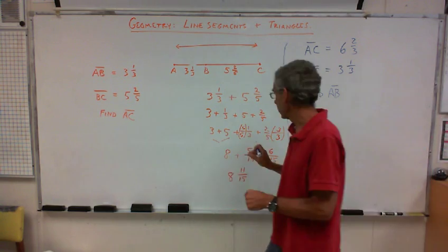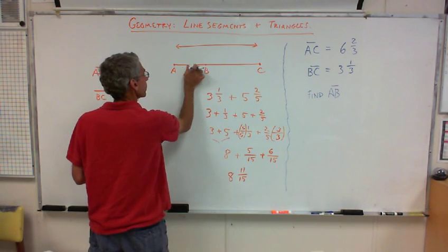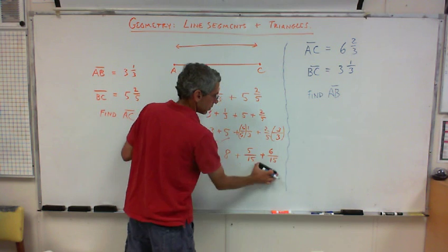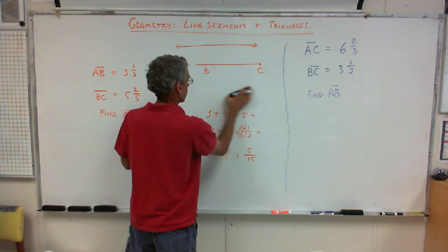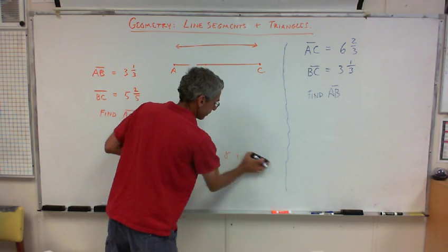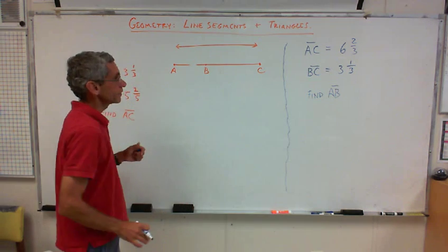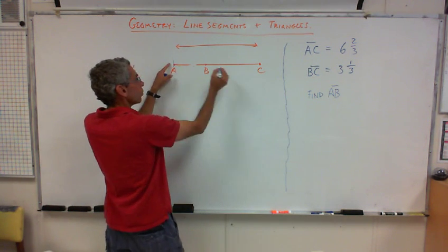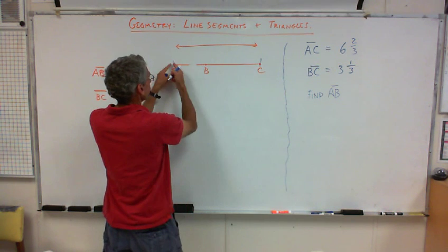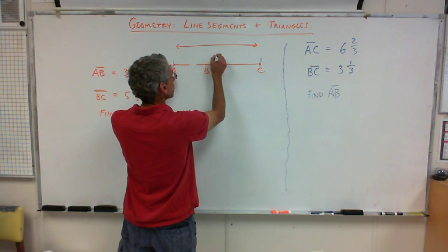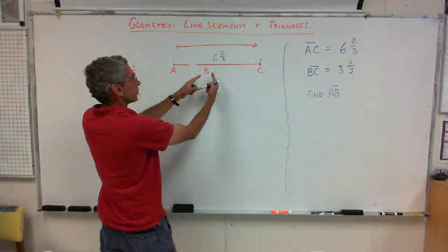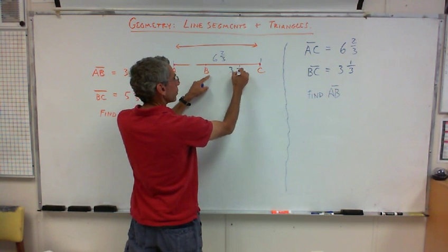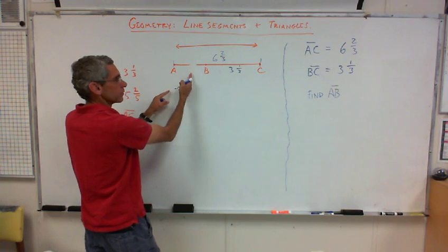So, in that case, let's get rid of this now. Can I erase all this stuff now? Yes? Yes? Yes. So, it's not confusing us. Okay. So, it's the same idea, only in this case, they gave us the total length from here to here is six and two-thirds. And then they gave us from B to C is three and a third. And they're asking us to find this right here.